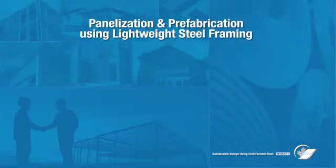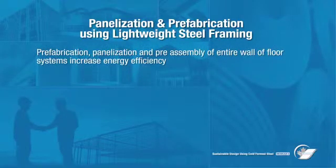Two specific cold-formed steel products — lightweight steel framing and steel building systems — are ideal for prefabrication in a factory prior to being shipped to the job site. Although there are some differences between these product types, both offer many of the same benefits. Prefabrication and panelization of lightweight steel framing, where entire wall and floor sections are pre-assembled and delivered to the site ready to install, offer increased efficiency.